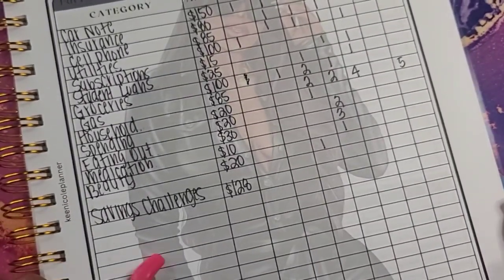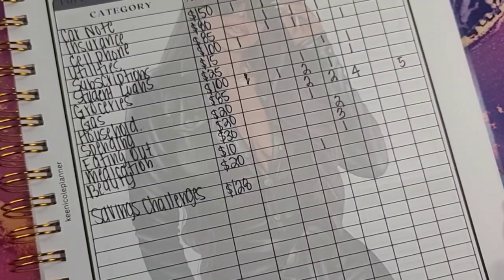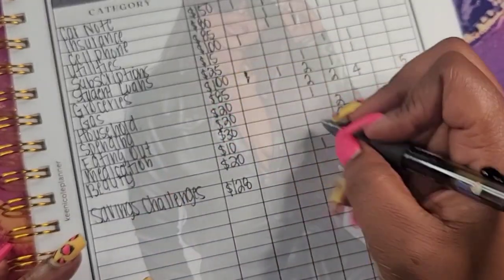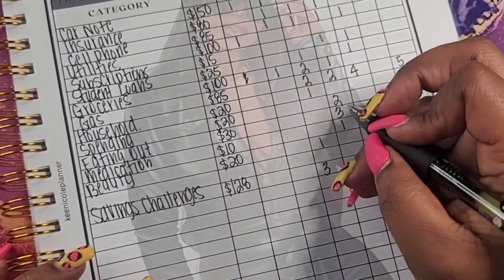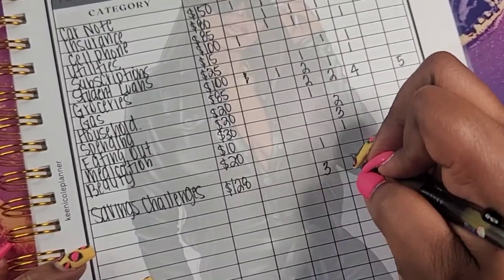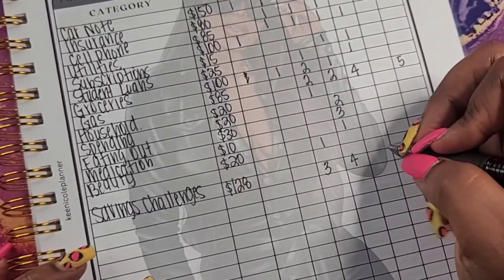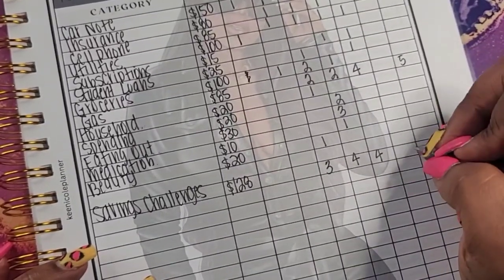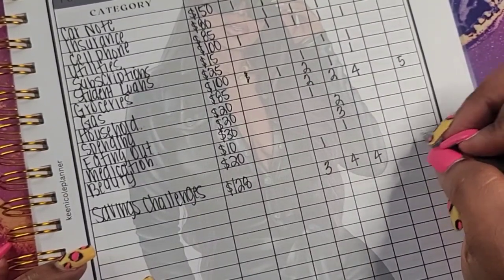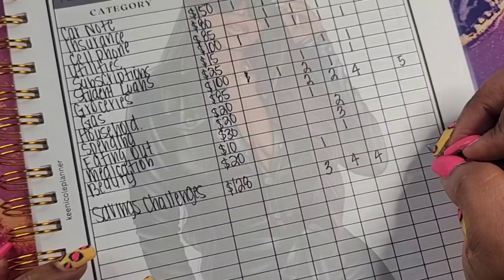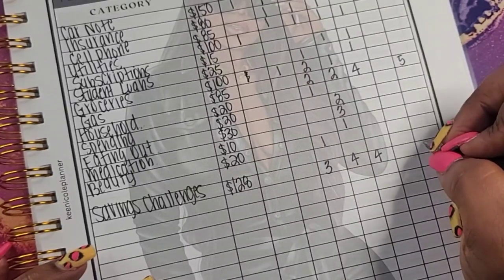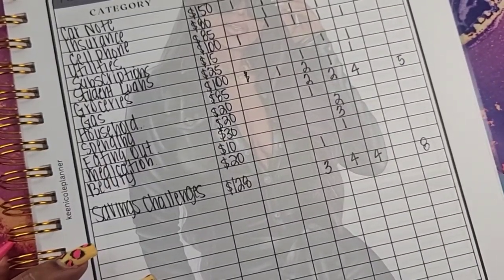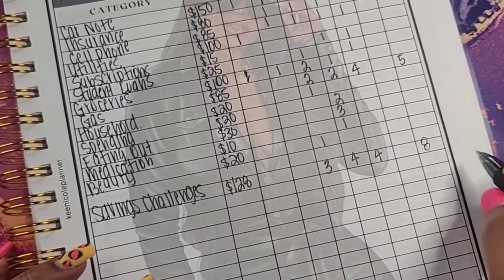All right, and then so we will move into my savings challenges. For my savings challenges, I think I just want to do, let's see, $128. Let's do $320s, which is $60. $410s is $40, so that gives me $100. Let's do four fives. And that gives me a total of $128.